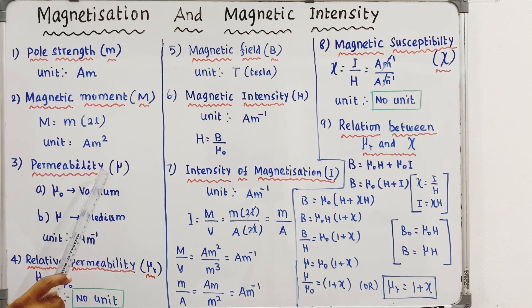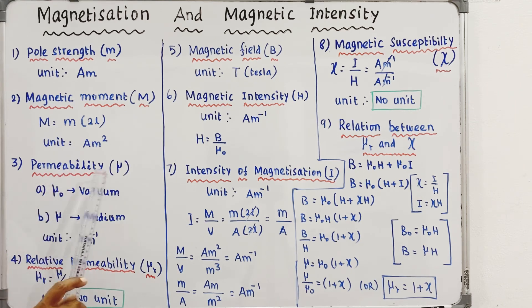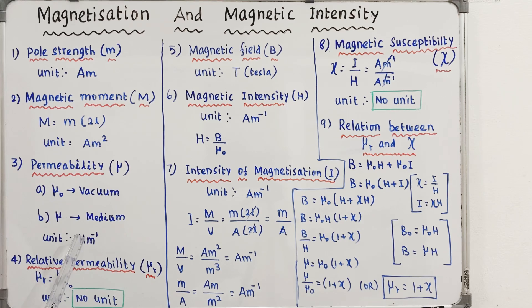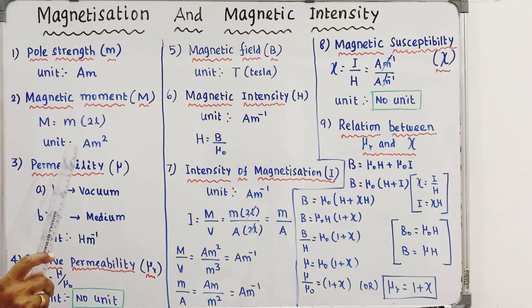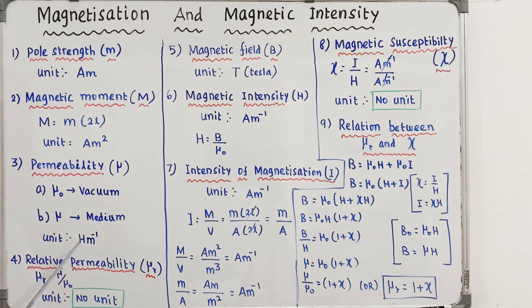In magnetostatics, what is mu? That is the permeability. The unit of permeability is Henry per meter. Henry is named after a scientist. A solenoid or coil has inductance, and the unit of inductance is Henry.